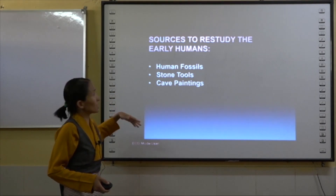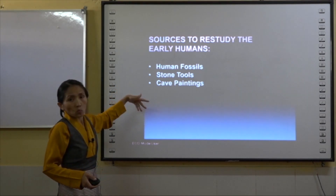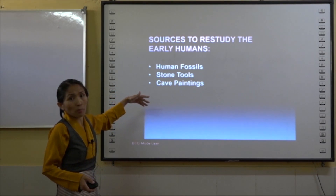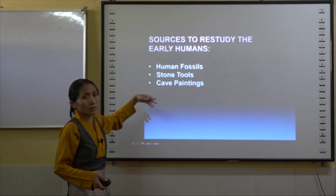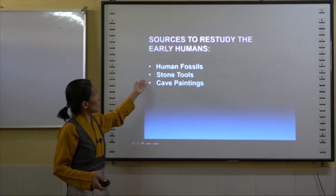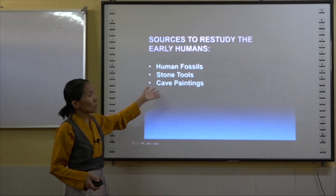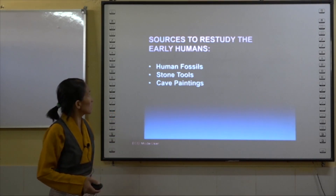In your textbook, three sources are particularly mentioned for restudying early humans: the first is human fossils, the second is stone tools, and the last is cave paintings.